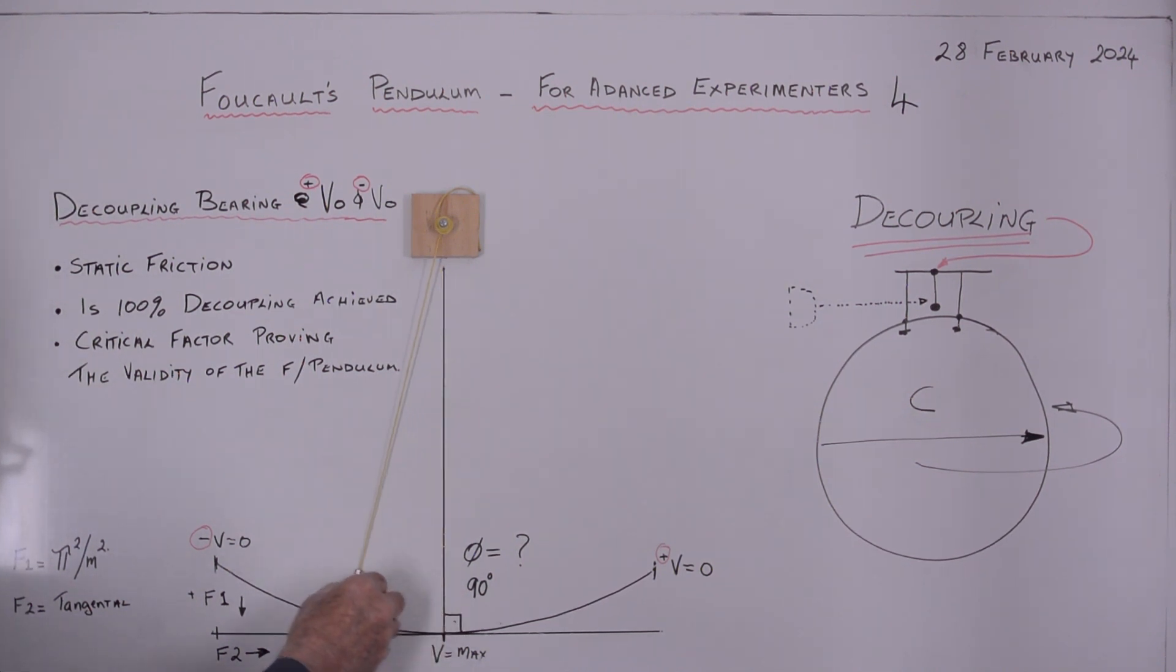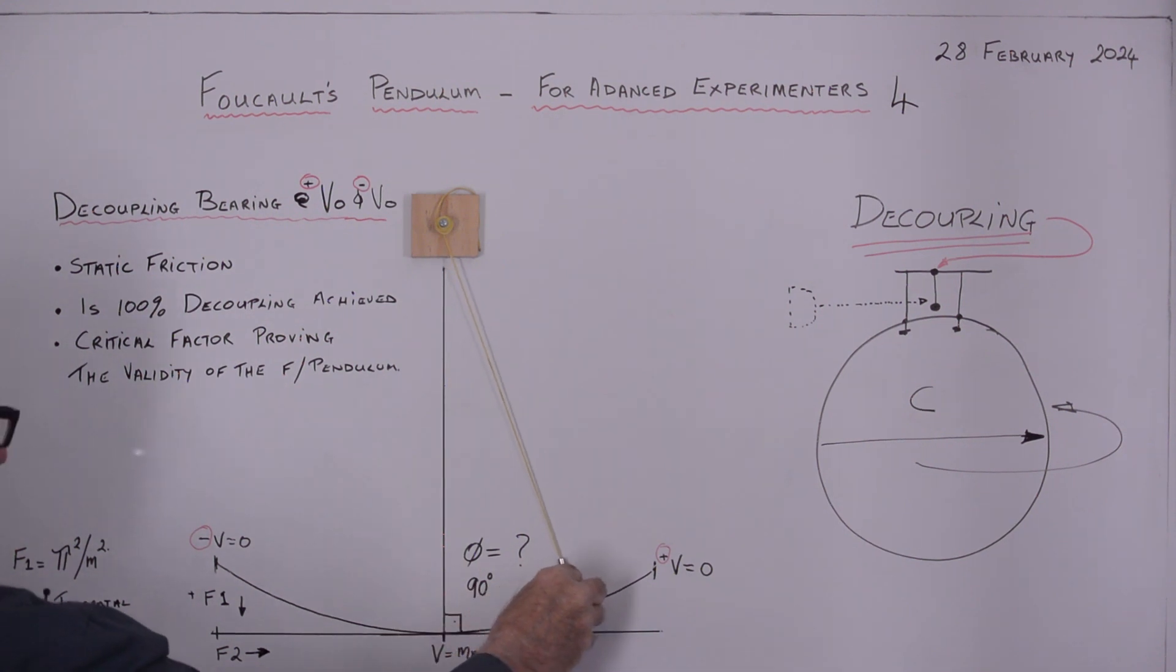But the pendulum will go through transitions from zero to slightly increasing velocity, increasing velocity, increasing velocity to maximum, then decreasing, decreasing, stop.